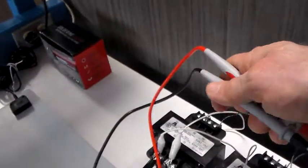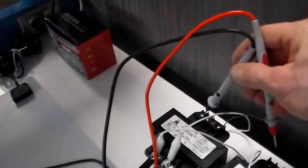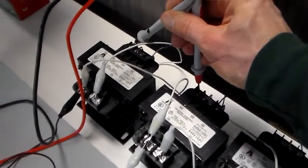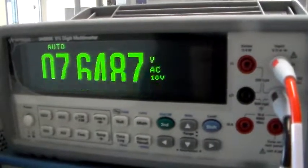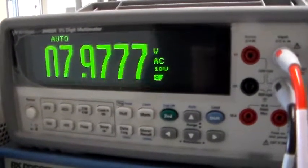And then going over here to my transformer, I'm going to measure the high voltage output of the transformer. Now, there we go. So line voltage right there. And that is reading 7.7, 7.6 volts, somewhere in that neighborhood.